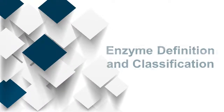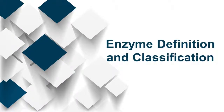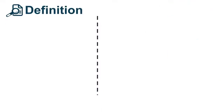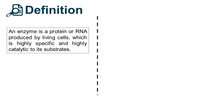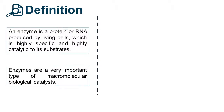Brief Introduction of Enzyme Definition and Classification, produced by Creative Enzymes. An enzyme is a protein or RNA produced by living cells, which is highly specific and highly catalytic to its substrates. Enzymes are a very important type of macromolecular biological catalysts.